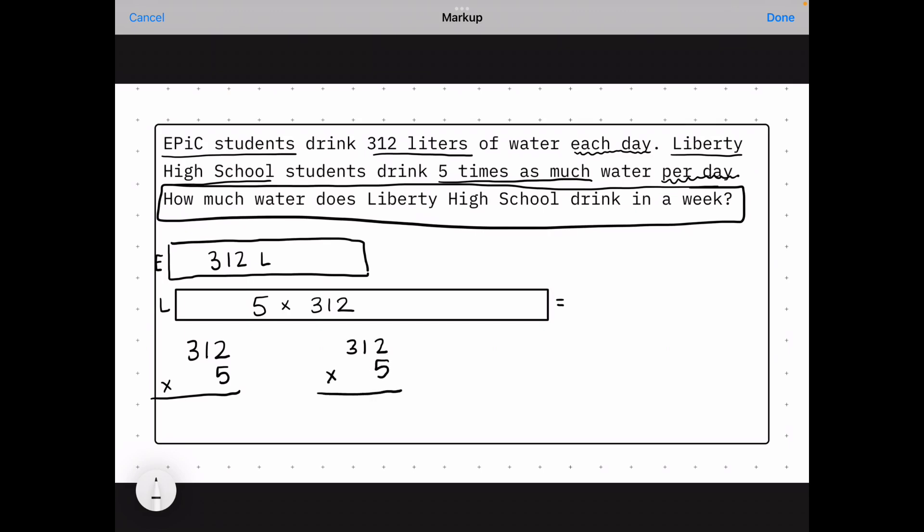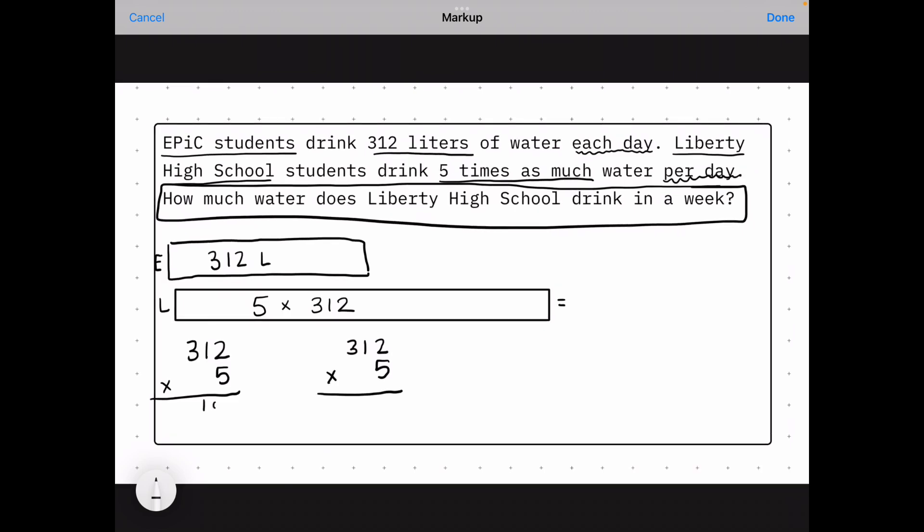You're going to start to get some choice in how you want to solve problems. So partial products, 5 times 2 is 10, 5 times 10 is 50, and 5 times 300 is 1,500.